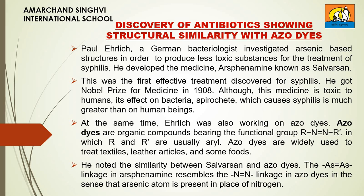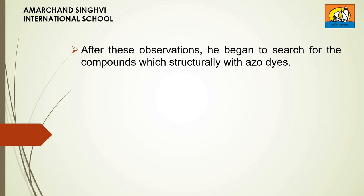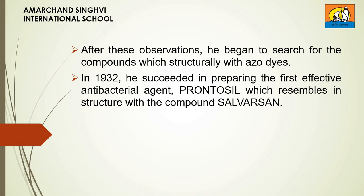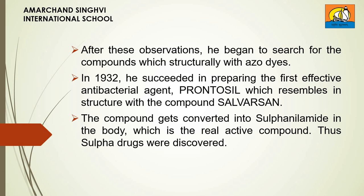He noted the similarity between Salvarsan and azodides. The arsenic double bond arsenic linkage present in Arsphenamine resembles the nitrogen double bond nitrogen linkage in azodides, in the sense that the arsenic atom is present in place of the nitrogen atom. After these observations, he began to search for compounds which structurally resembled azodides. In 1932, he succeeded in preparing the first effective antibacterial agent prontosil, which resembles in structure with Salvarsan. The compound gets converted into sulfanilamide in the body, which is the real active compound — thus sulfa drugs were discovered.